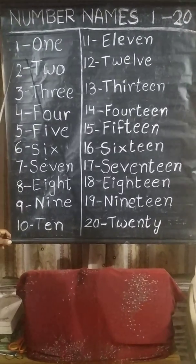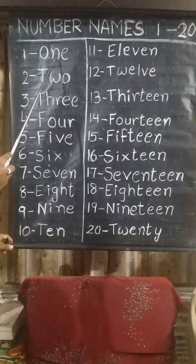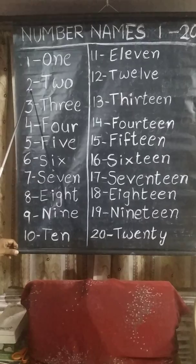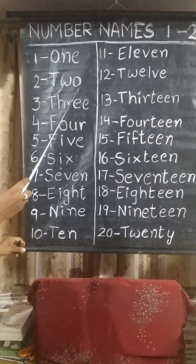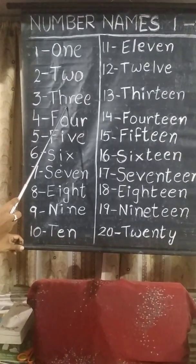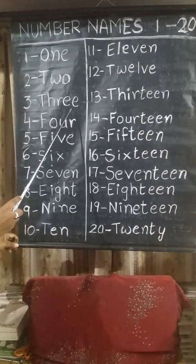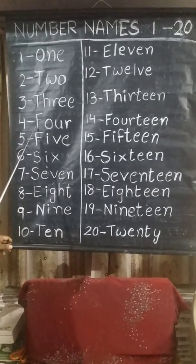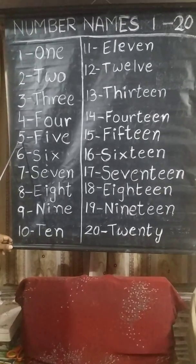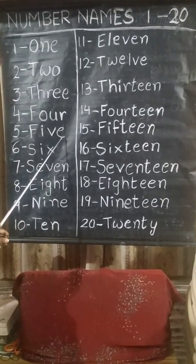We will start now with the number names. 1 — O, N, E. ONE. 2 — T, W, O. TWO. 3 — T, H, R, E, E. THREE. 4 — F, O, U, R. FOUR. 5 — F, I, V, E. FIVE.